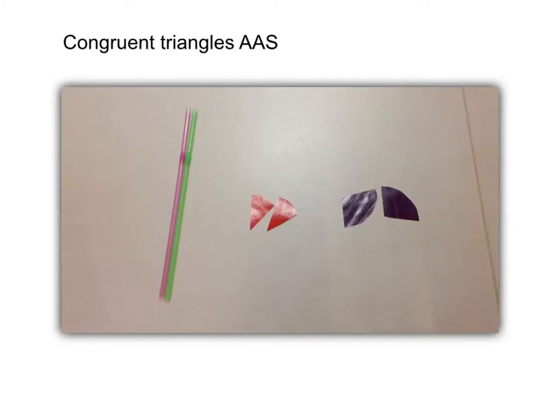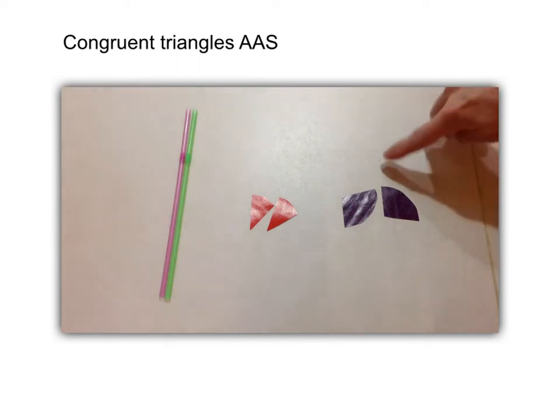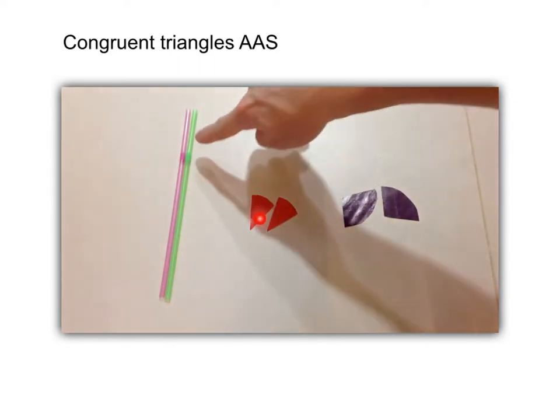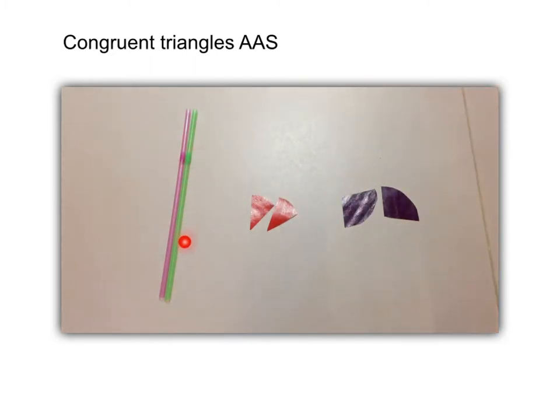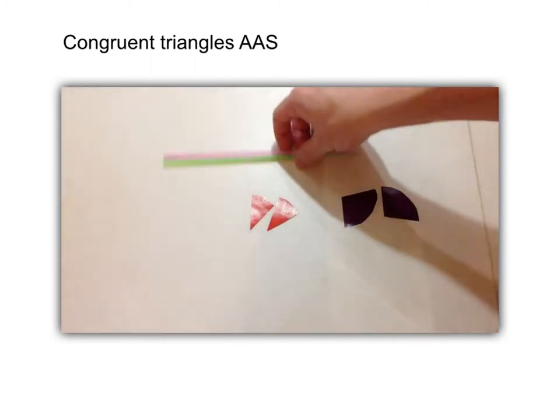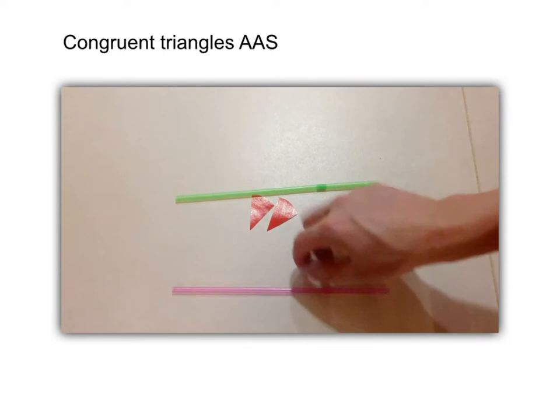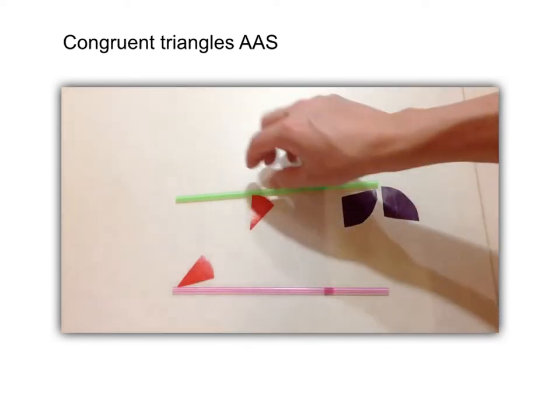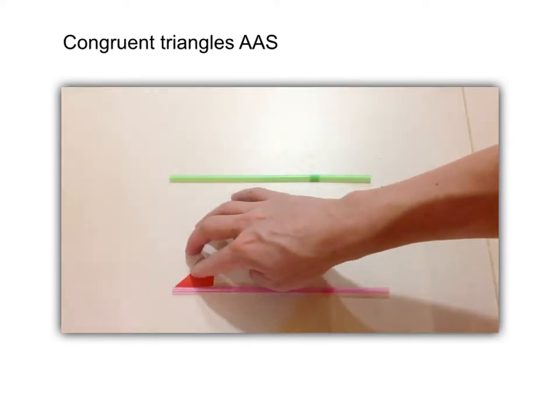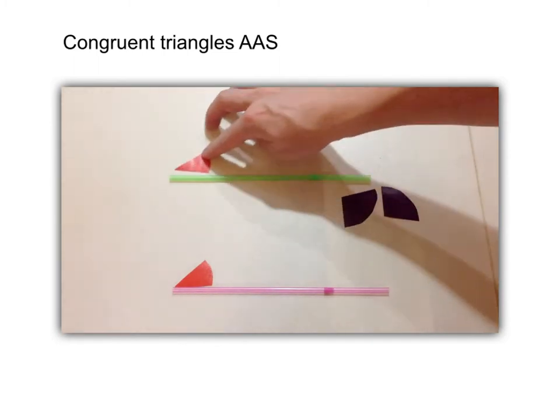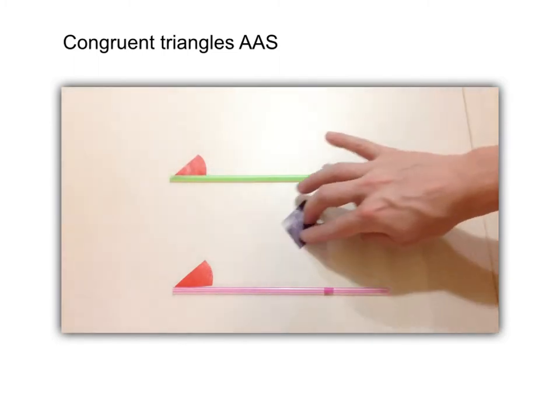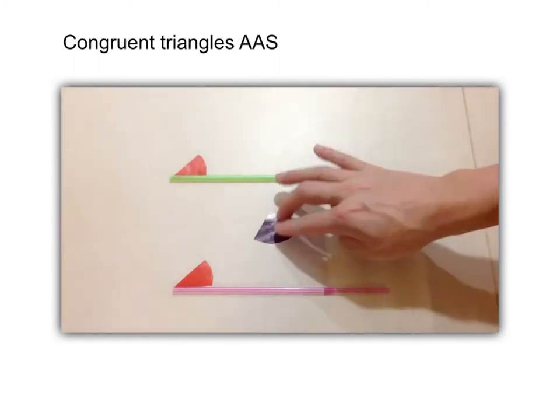Next we come to the congruent triangle condition AAS. Suppose we have two pairs of equal angles and one pair of straws which have the same length. Now we are going to arrange these angles and drinking straws into two congruent triangles under the condition AAS.